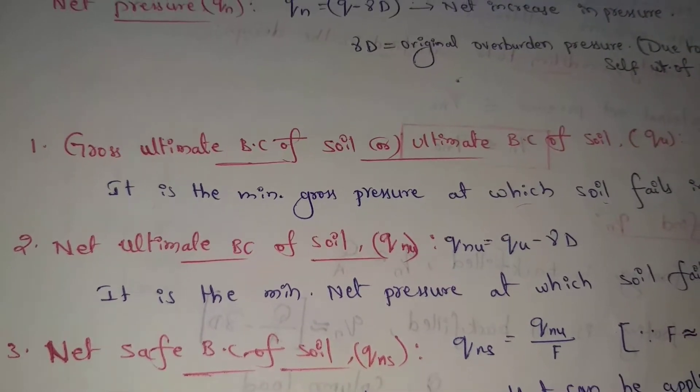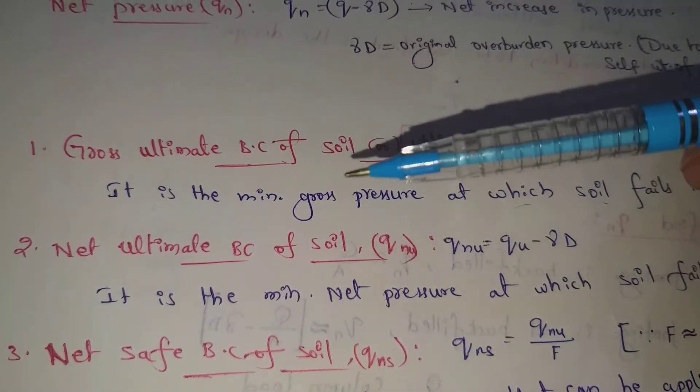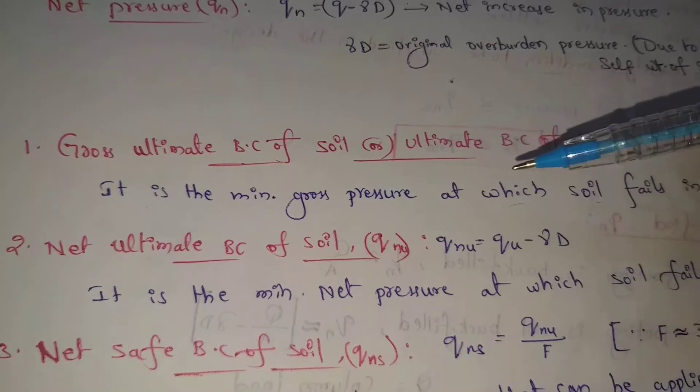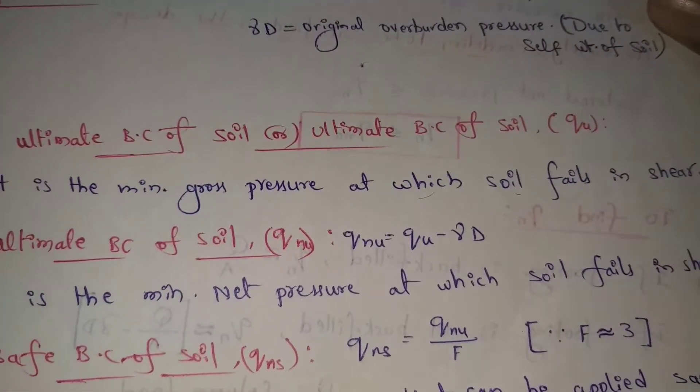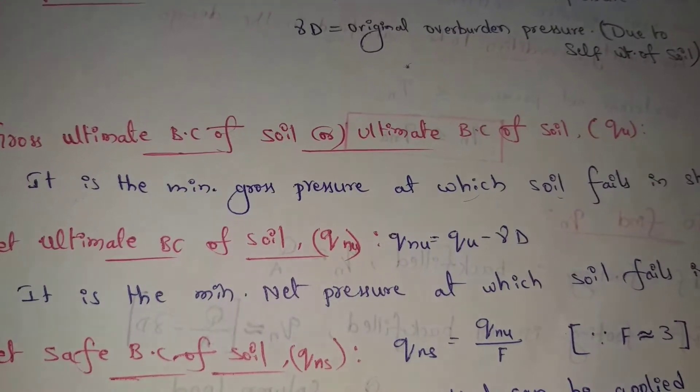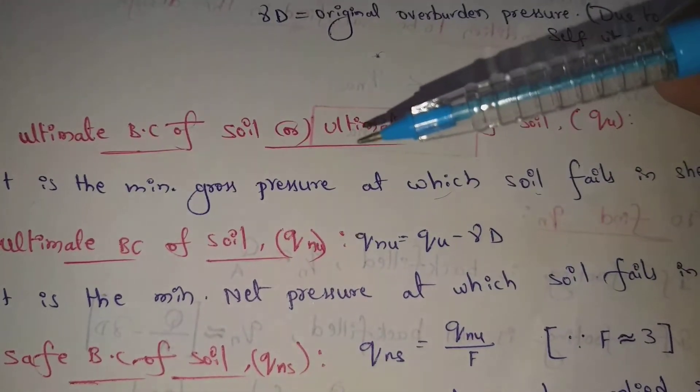Gross ultimate bearing capacity of soil. It is the minimum gross pressure at which soil fails in shear. This is the soil at which we have to do shear failure. This is the minimum gross pressure.